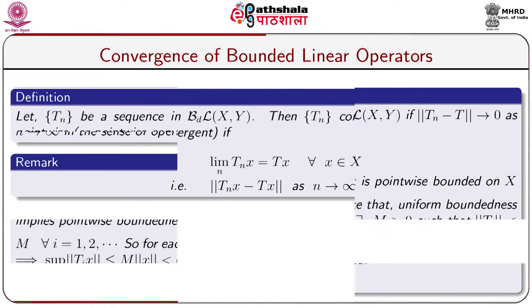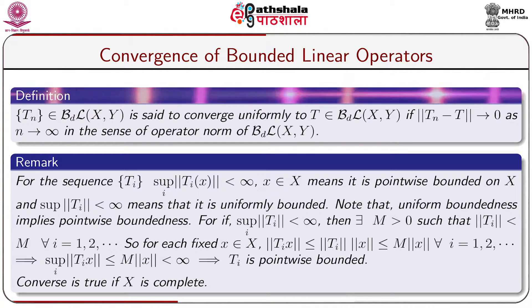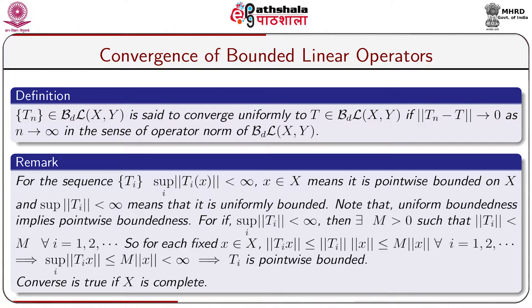Let BdL(X,Y) be the collection of all bounded linear operators from X to Y, and let T_n be a sequence of bounded linear operators. Then T_n is said to converge uniformly to T in BdL(X,Y) if the operator norm of T_n minus T tends to 0 as n tends to infinity, where the operator norm is defined as the supremum of norm of T(x) over all x with norm at most 1, or equivalently, the supremum of norm of T(x) divided by norm of x for x nonzero.